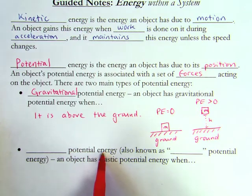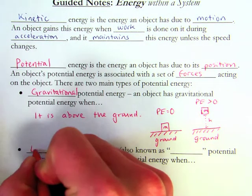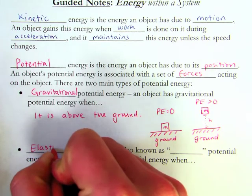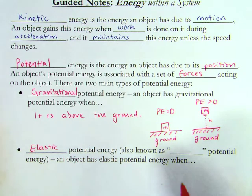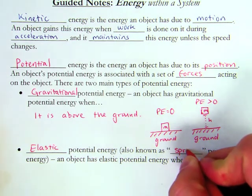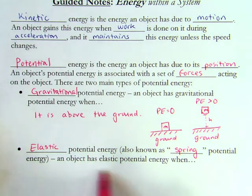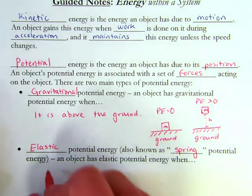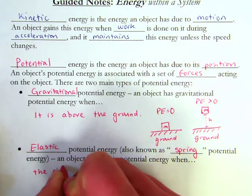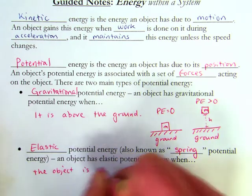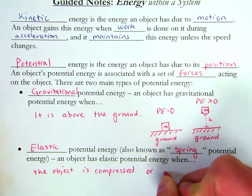The next kind of potential energy is one that we won't see as much, but is still very important, is called elastic potential energy, which is also known as spring potential energy. So an object has elastic potential energy when the object is compressed or stretched.